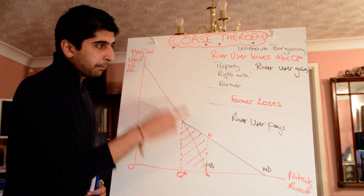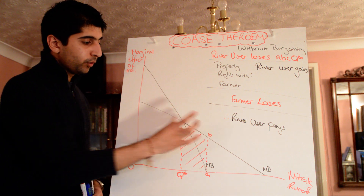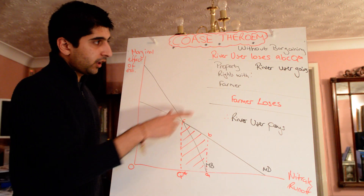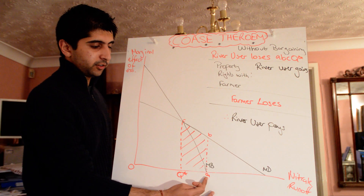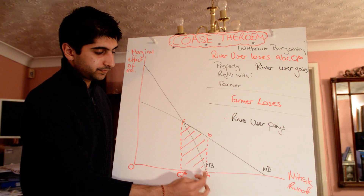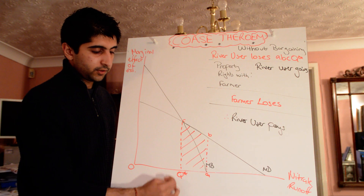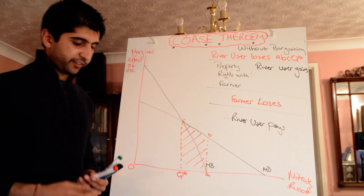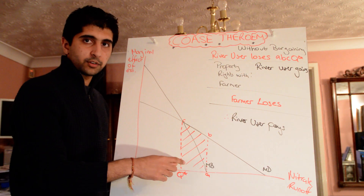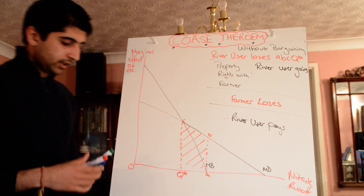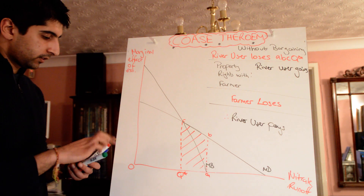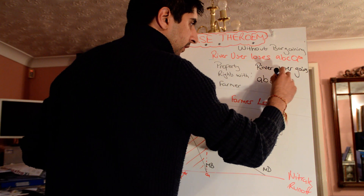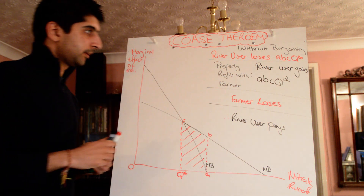The river user can now bargain with the farmer over the level of production. The river user would prefer the farmer to switch production from point A to point Q* — the social optimum level. That means the river user would suddenly gain the entire area A, B, C, Q* in welfare.